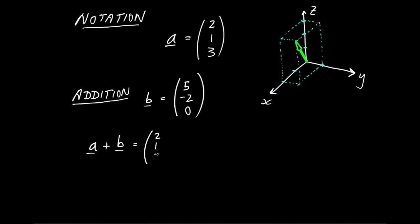Let's just substitute in 2, 1, 3. Add it on to 5, minus 2, 0. Now, what we do is we simply add the first component of vector A to the first component of vector B and so on down the list. Very simple. So we're adding 2 plus 5. We're going to add 1 plus minus 2 and 3 plus 0. And we just tidy that up. So that's going to be 7, minus 1, and 3.